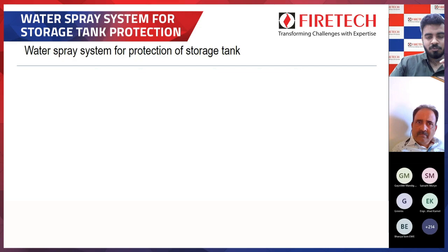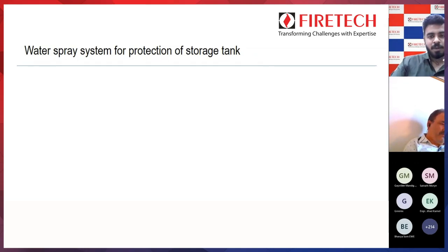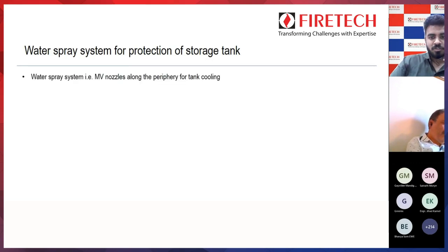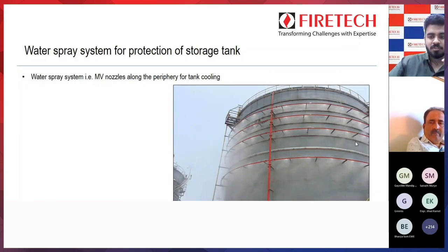That covers the fixed foam system for fixed roof tanks, floating roof tanks, and dike area protection. These are the primary, secondary, and tertiary devices used for storage tank protection. Water spray systems are also used for storage tank protection — specifically for tank cooling using MV nozzles placed at the tank periphery. In future webinars, we will cover the calculations for MV nozzle quantity for tank cooling.